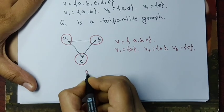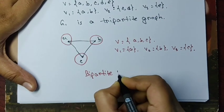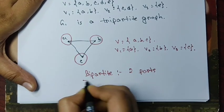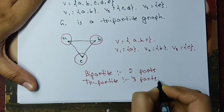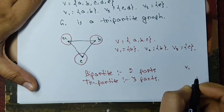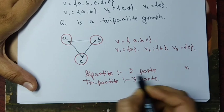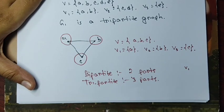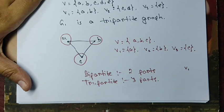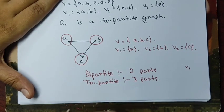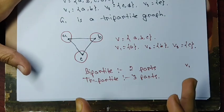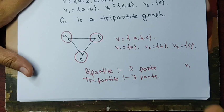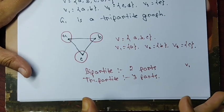The concept is now clear: for bipartite graphs we have two parts, and for tripartite graphs we have three parts, with the condition that no two vertices from the same part are adjacent. We can generalize further — this is called a multipartite graph — when we have a partition of the vertex set with n number of parts and no two vertices from the same part are adjacent.